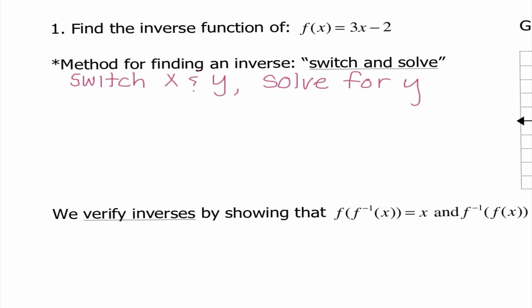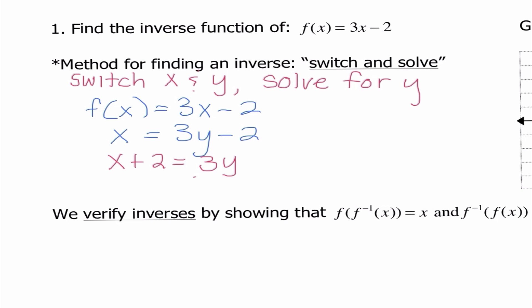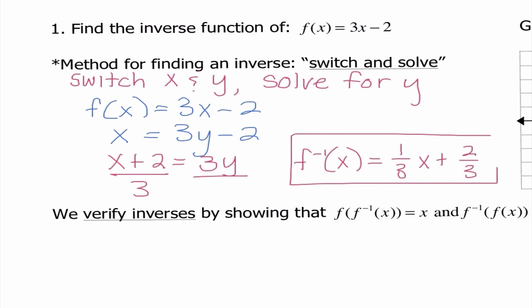Looking at f of x equals 3x minus 2 — you might be thinking, how can I switch x and y if I don't see a y? But f of x means y. So I'm going to make this x and make our x value equal to y. That's the switch. Now I isolate y by adding 2 to both sides, then dividing both sides by 3. So the inverse of f of x equals one-third x plus two-thirds — or equivalently, x plus 2 over 3.